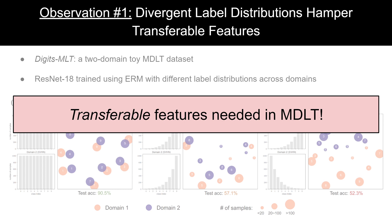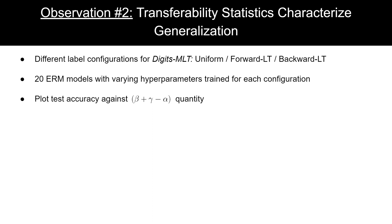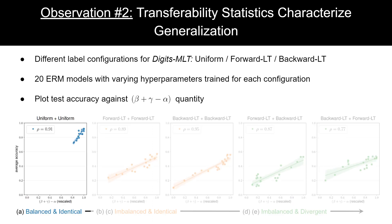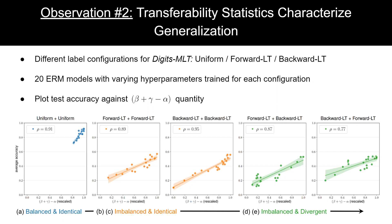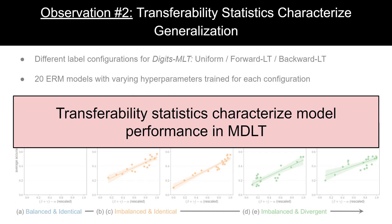These intriguing observations indicate that divergent label distributions across domains could hamper transferable features, and transferable features are needed for good performance in MDLT. Further, we can take a close look at how transferability statistics influence generalization. We train ERM models using 20 different hyperparameter setups and plot the test accuracy against the beta plus gamma minus alpha quantity. We vary the label distributions for the two domains, including both uniform, both long-tailed but identical, and both long-tailed but divergent. Across different label distribution setups, we can clearly observe a strong correlation between test accuracy and the beta plus gamma minus alpha quantity, indicating that transferability statistics characterize model performance in MDLT.